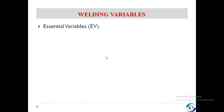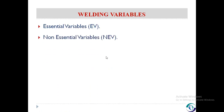There are three types of welding variables: essential variables, non-essential variables, and supplementary essential variables. To understand the welding procedure specification, we must know about the welding variables, because the WPS contains a set of essential variables, non-essential variables, and supplementary essential variables.